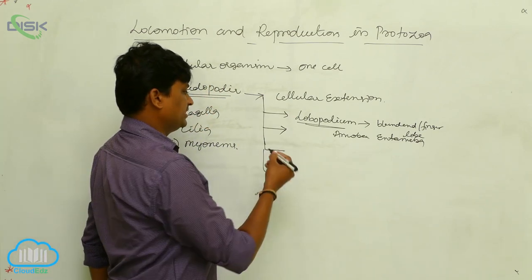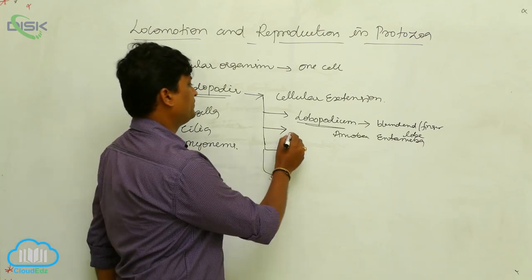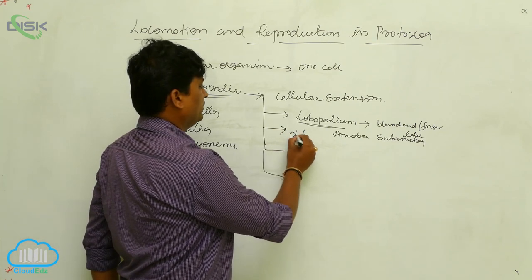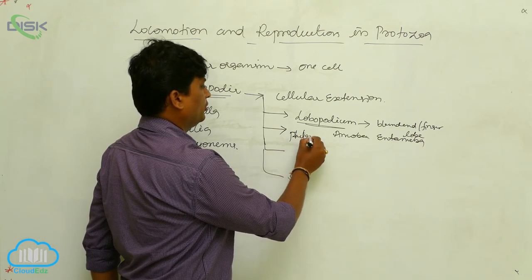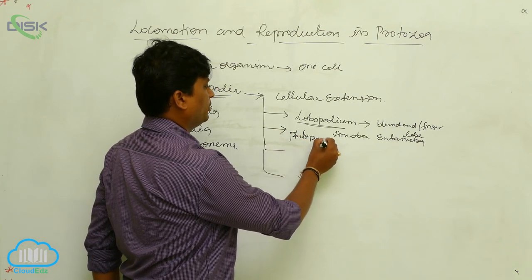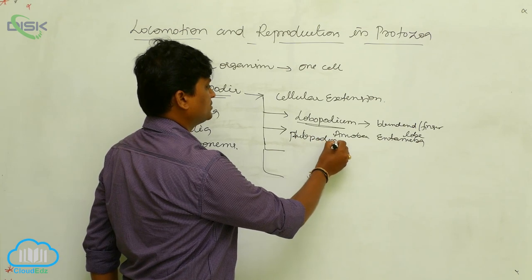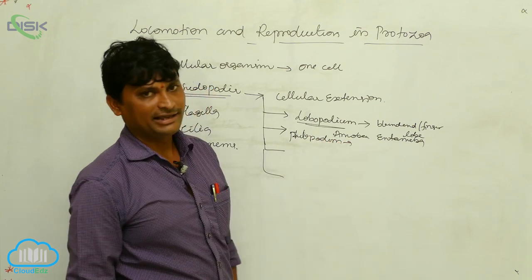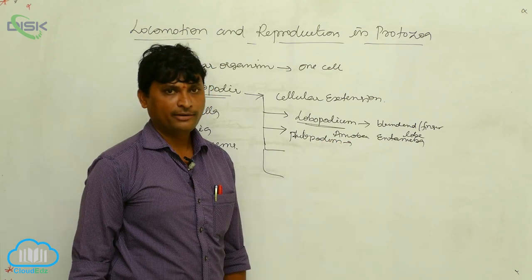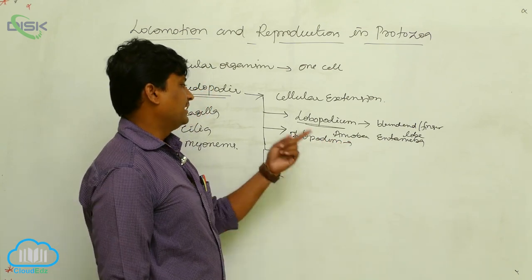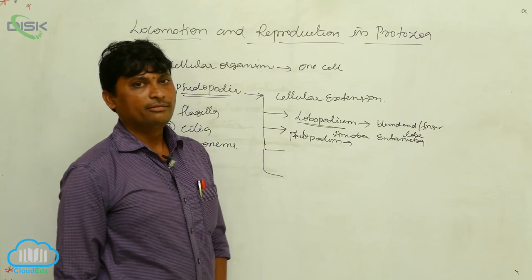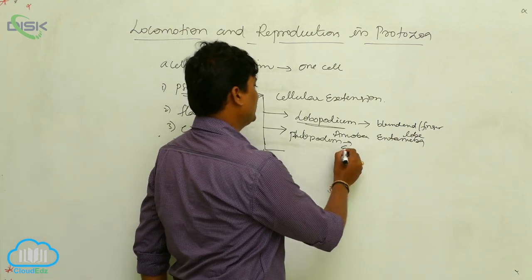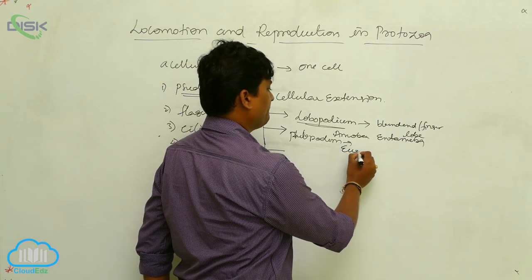The second type is filopodia. Filopodia are filamentous-type pseudopodia. An example is Euglypha.